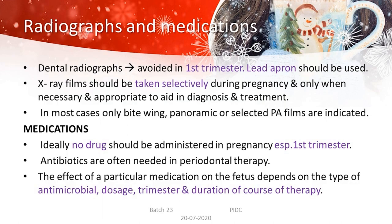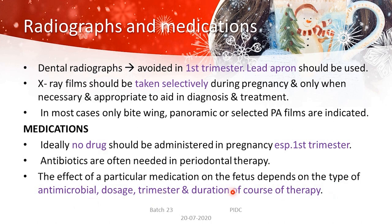Regarding radiographs: avoid them during the first trimester; lead apron should be used whenever taking X-rays thereafter. X-ray films should be taken selectively — in most cases, panoramic or selective periapical films are indicated. For medications, ideally no drug should be prescribed during the first trimester, but when antibiotics are necessary for periodontal therapy, be particular about the type of antimicrobial, the dosage, the trimester, and the duration of the course of therapy.